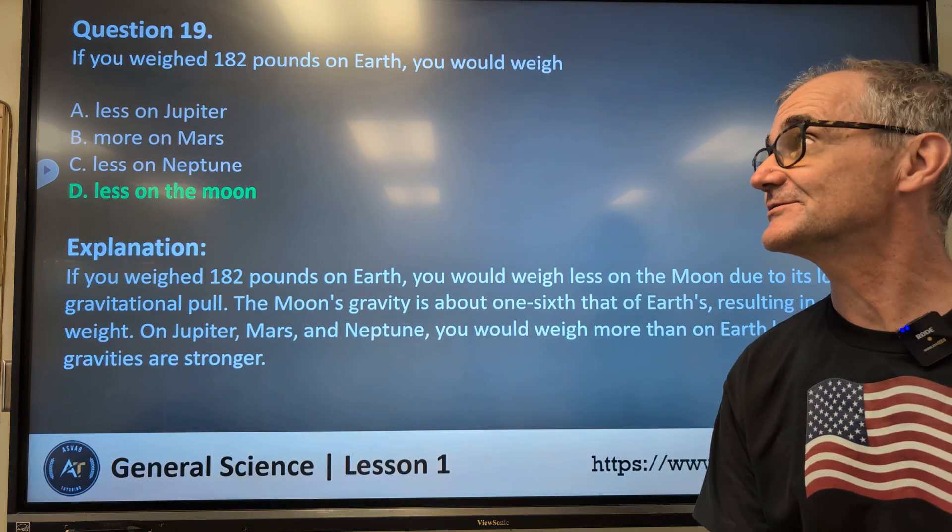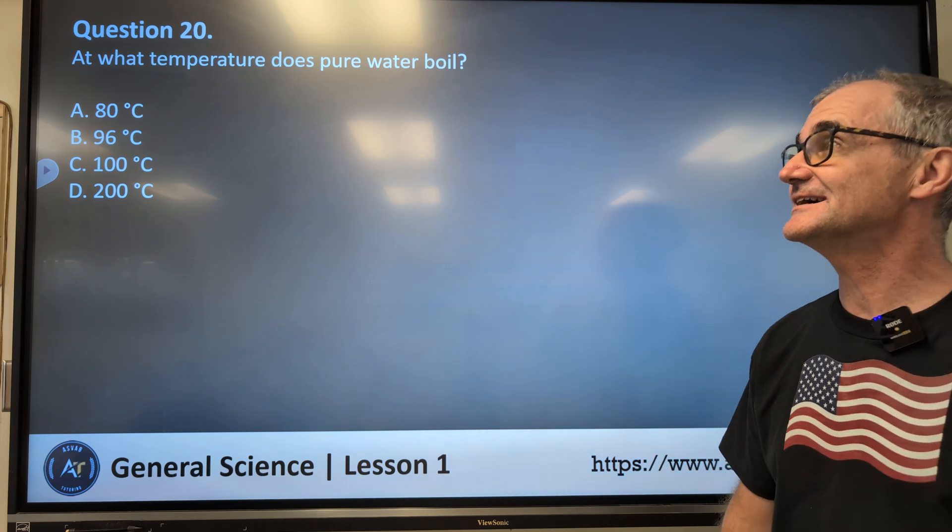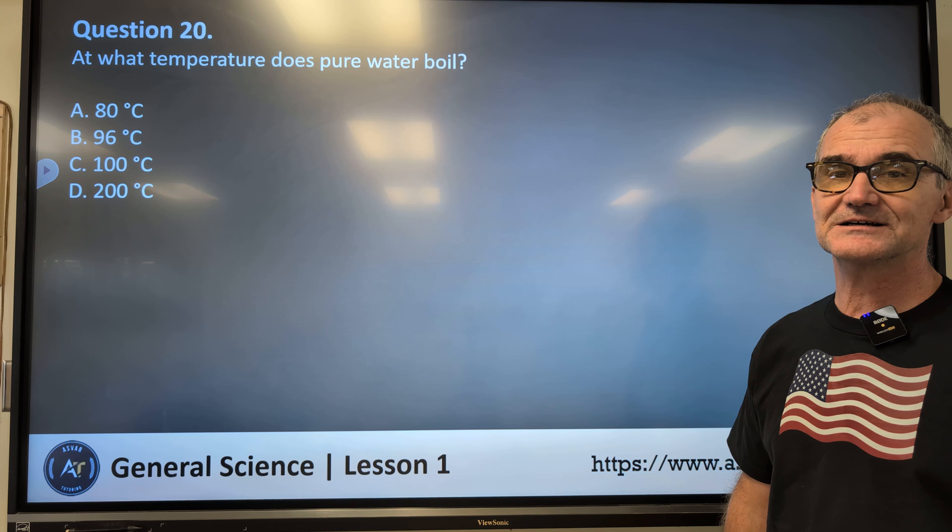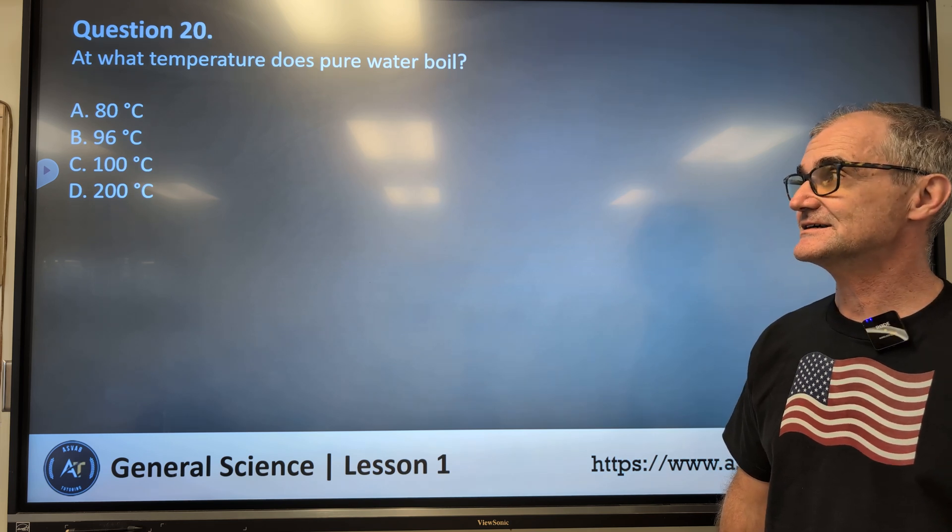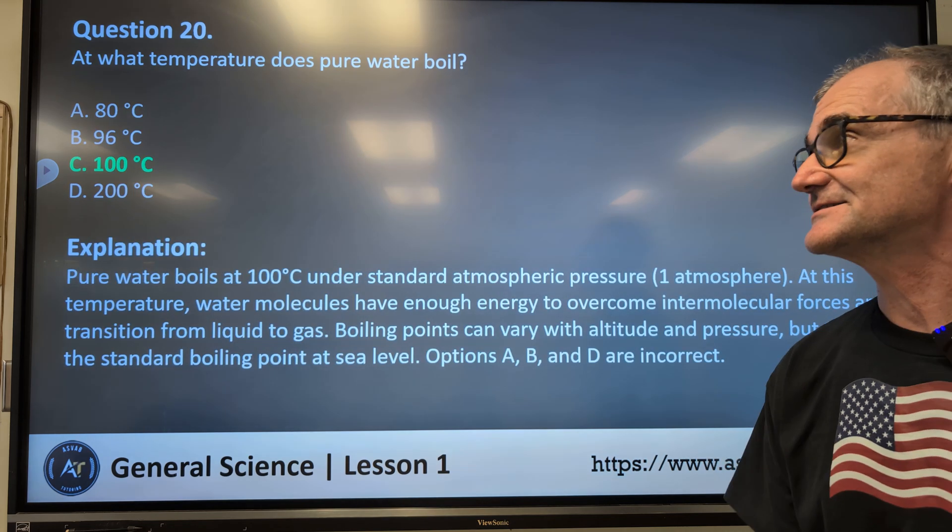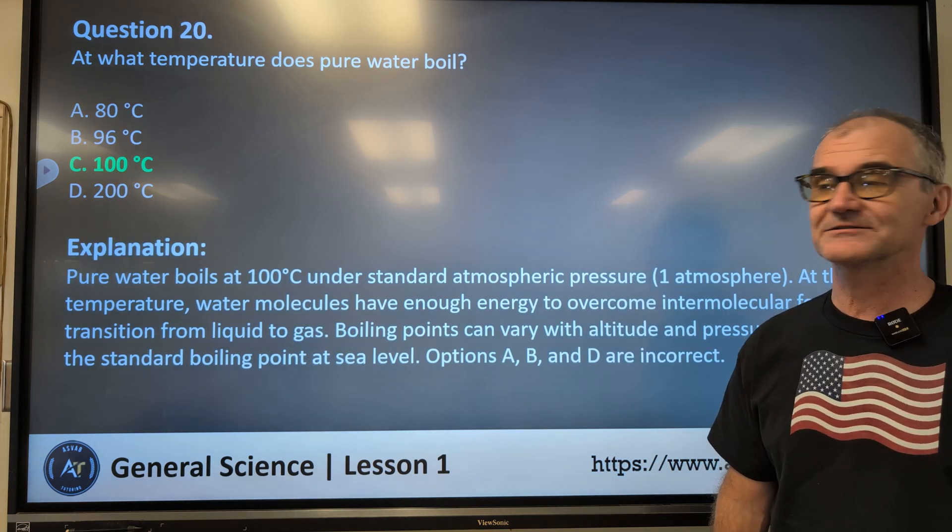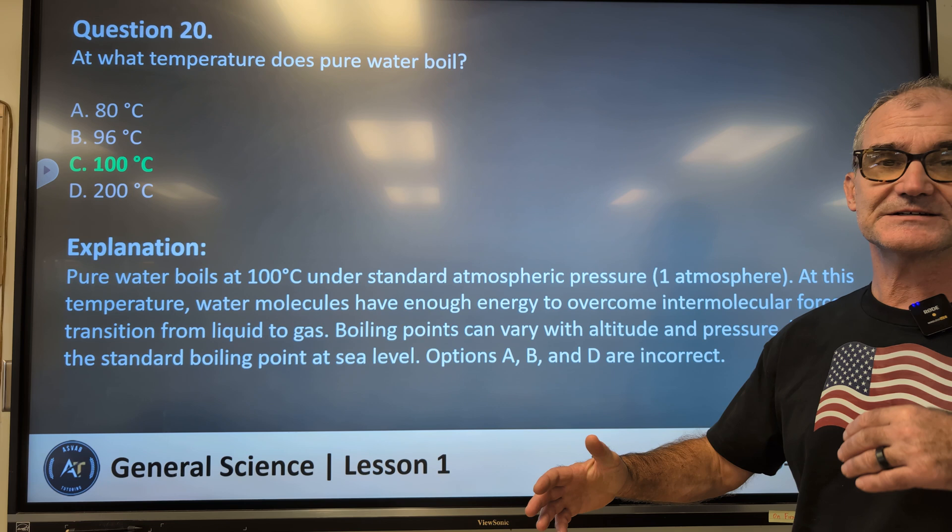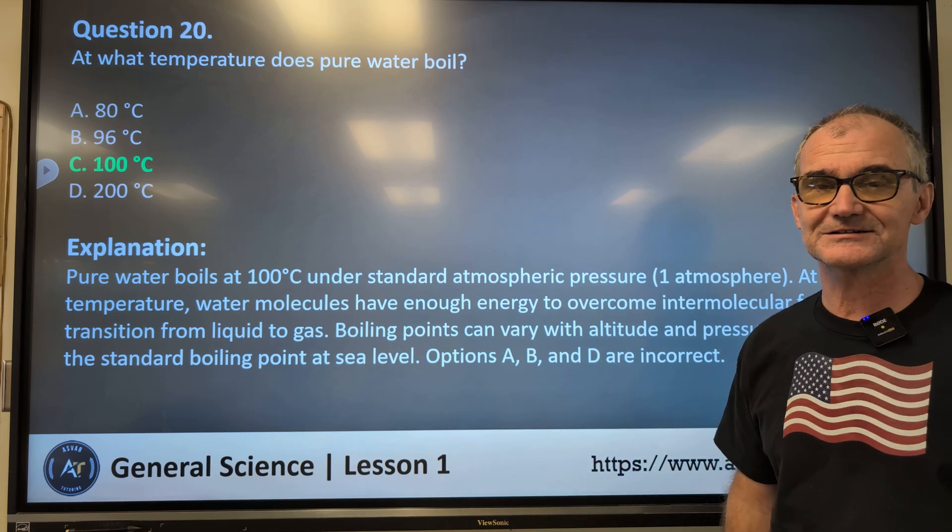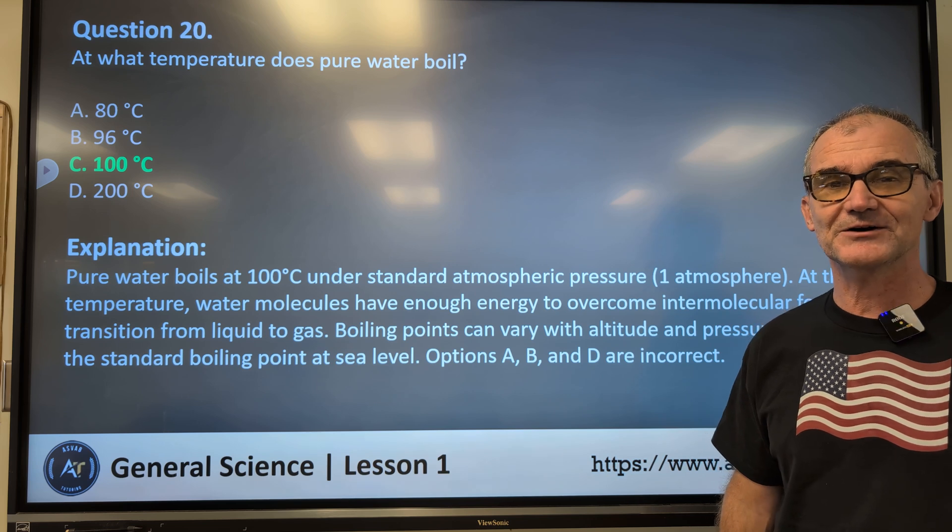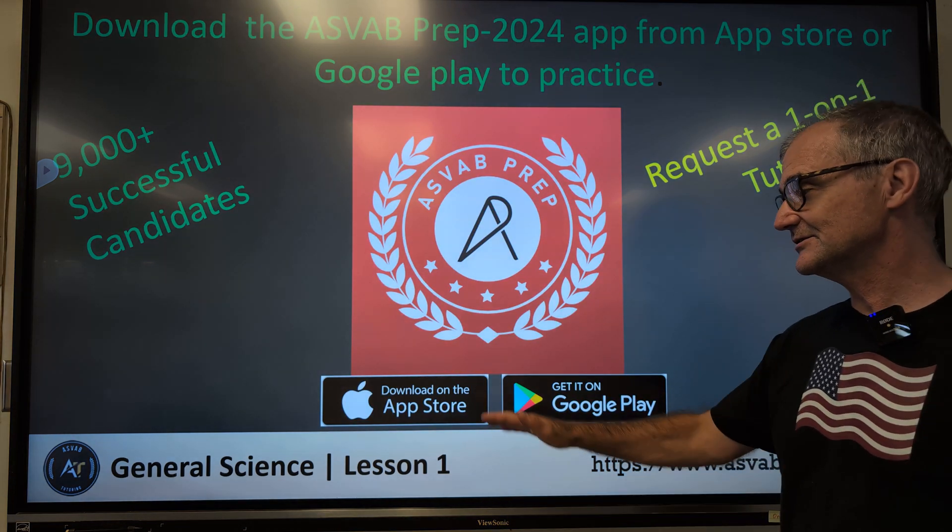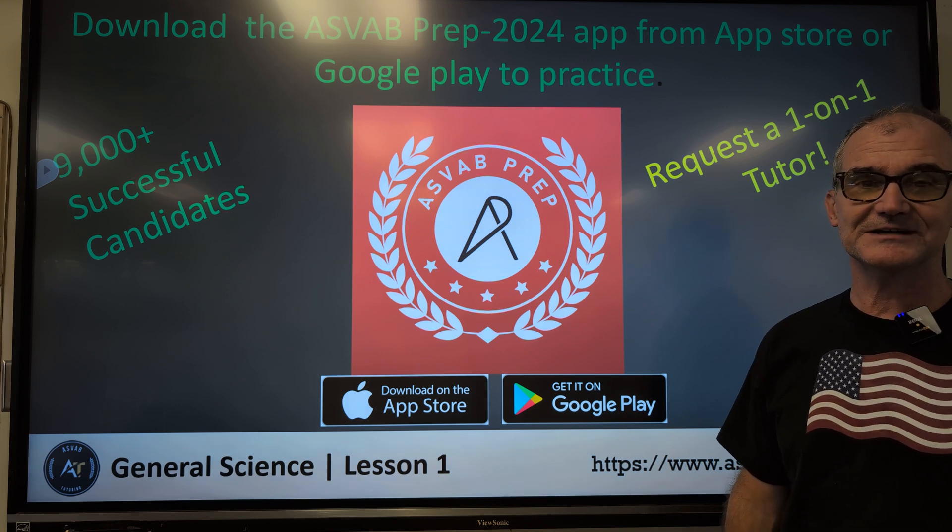All right, here we are, question number 20. If you're still here, well done. What temperature does pure water boil? 80 degrees Celsius. The correct answer is C, 100 degrees Celsius. The whole Celsius is based on water, freezing at zero, boiling at 100 degrees. All right, again, thank you for watching. I'm hoping this was helpful. And if you want any more resources or support, you could get it at this place right here. I appreciate your time. Thank you.